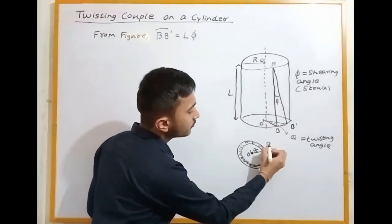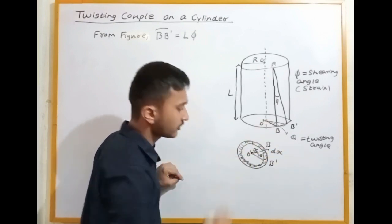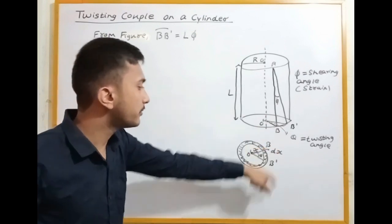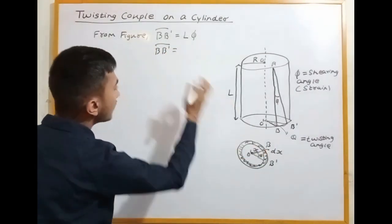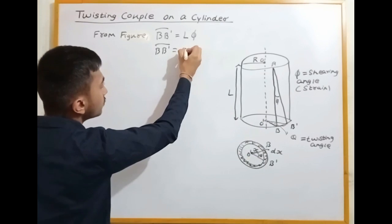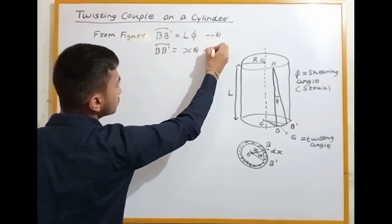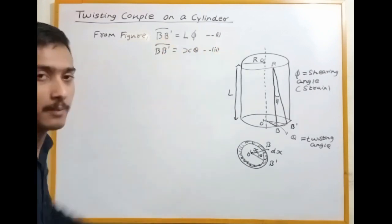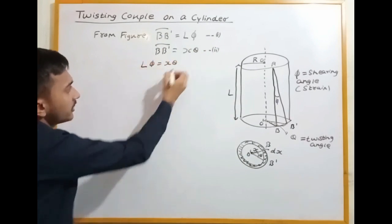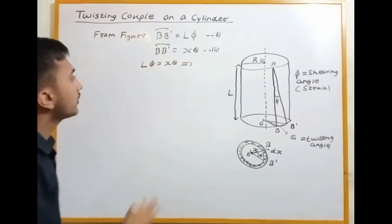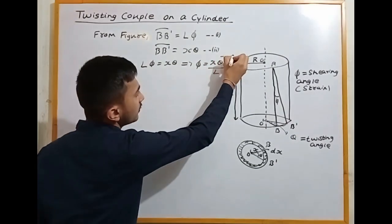So this point B to B dash will move, then all of the cylinder will go. This point B to B dash, B dash — we will go to theta. This figure we will go to BB dash. BB dash arc equals x times theta. Equation 1, Equation 2: BB dash equals x times theta.